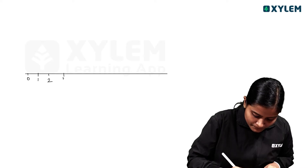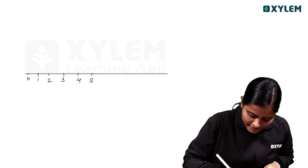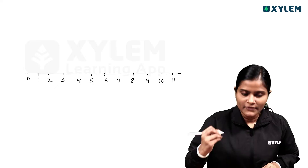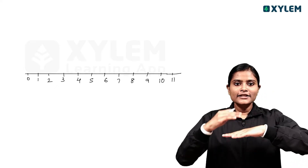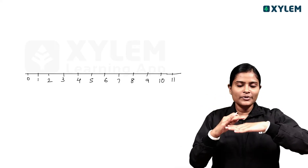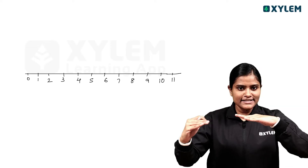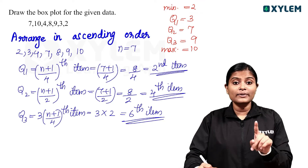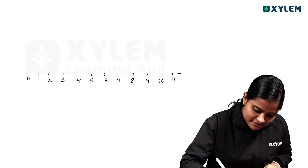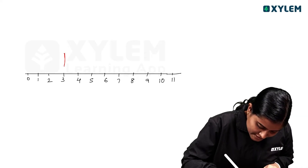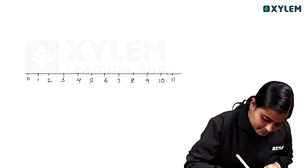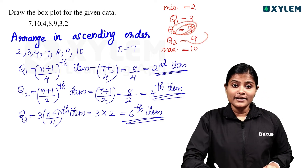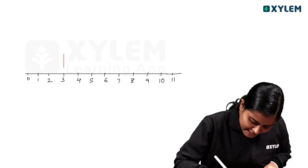We draw a number line: 0, 1, 2, 3, 4, 5, 6, 7, 8, 9, 10. We use a scale of 1 centimetre per unit. We mark the minimum value, which is 2. Then Q1 is 3, Q2 is 7, and Q3 is 9. We mark a line at 3 for Q1, a line at 7 for Q2, and a line at 9 for Q3.